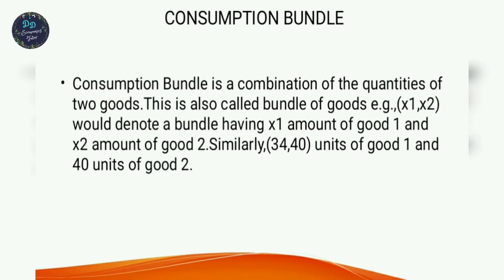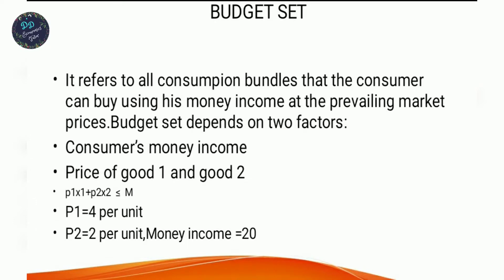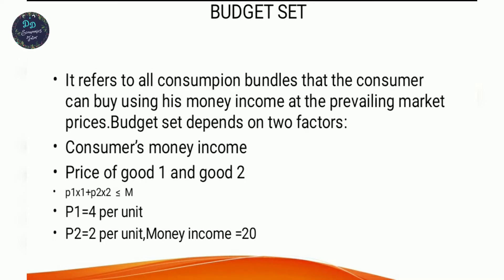The budget set refers to all consumption bundles that the consumer can buy using their money income at the prevailing market prices. The budget set depends on two factors: one is the consumer's money income, and the other is the price of good one (p1) and the price of good two (p2). The condition is p1·x1 + p2·x2 is less than or equal to income M.